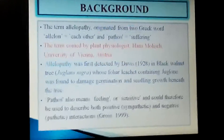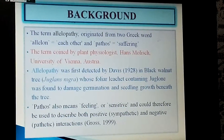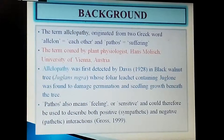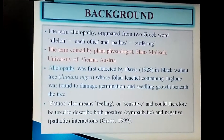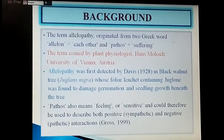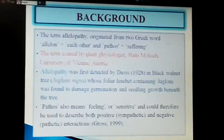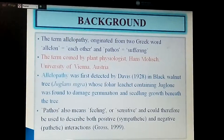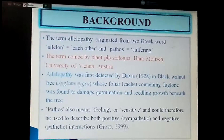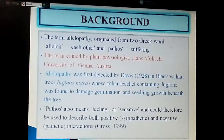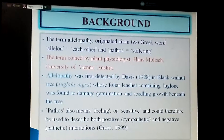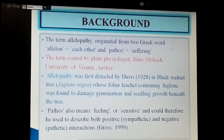Background: the term allelopathy originated from two Greek words — 'allelon' meaning 'each other' and 'pathos' meaning 'sufferings' — coined by plant physiologist Hans Mollis of the University of Vienna, Austria. Allelopathy was first detected by Davis in the black walnut tree, whose foliar deterrent containing juglone was found to damage germination and seedling growth beneath the tree. Juglone is an allelochemical. 'Pathos' also means feeling or sensitive and could therefore be used to describe both positive and negative interactions.